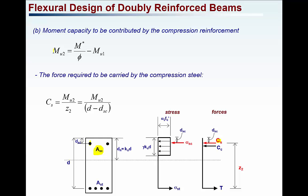Once you know the moment capacity contributed by the concrete block, you can calculate the moment that needs to be taken by the compressive steel, Cs. The moment capacity to be contributed by the compressive steel is MU2 = MU − MU1, that is the total moment capacity minus the moment capacity already contributed by the concrete block. The compressive force that needs to be taken by the compressive steel, Cs, can then be computed as MU2 divided by the lever arm Z2.